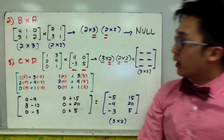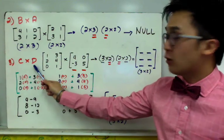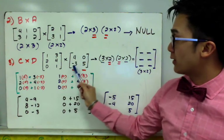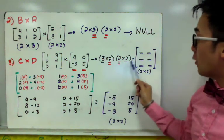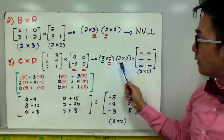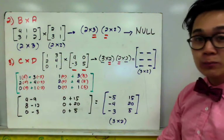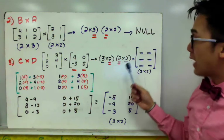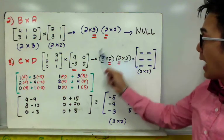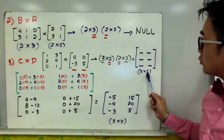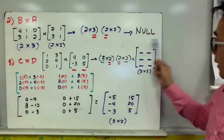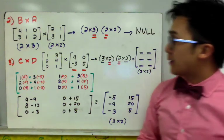For number three, we're multiplying C times D, where matrix C contains entries 1, 3, 2, 4, 0, 1 and is a 3 by 2 matrix, and matrix D contains 4, 0, negative 3, and 5 and is a 2 by 2 matrix. Writing their orders side by side to verify, the inner values are the same, so we can combine C and D by multiplication. The outer values are 3 and 2, so we expect a 3 by 2 matrix as our product.